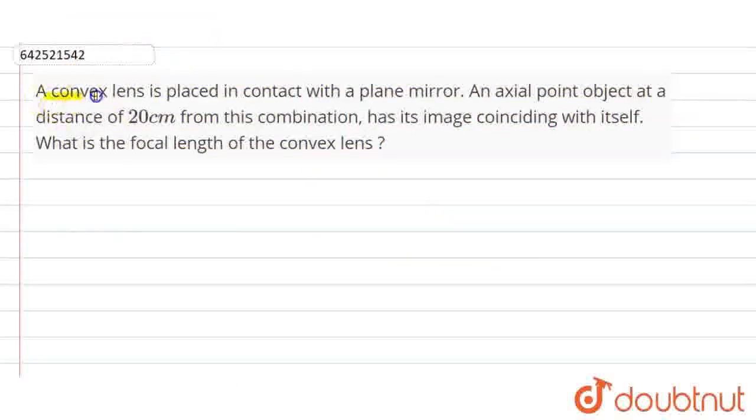Hello friends, question is given here. A convex lens is placed in contact with a plane mirror. An axial point object at a distance of 20 cm from this combination has its image coinciding with itself. What is the focal length of the convex lens?